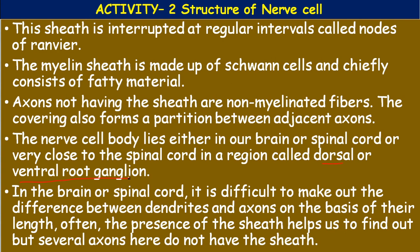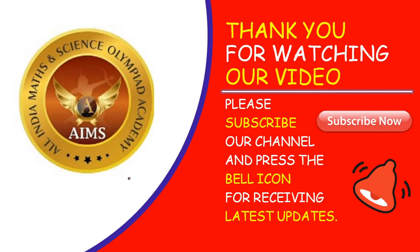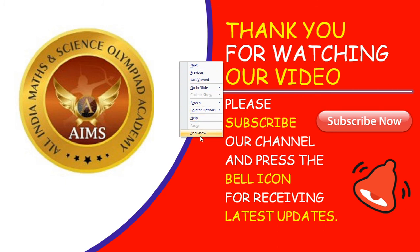Axons without a sheath are called non-myelinated fibers or non-myelinated axons. The nerve cell body lies either in the brain, spinal cord, or very close to the spinal cord in a region called the dorsal or ventral root ganglion. In the brain or spinal cord, it is difficult to distinguish dendrites from axons by length alone; the presence of the myelin sheath helps, but several axons in the brain and spinal cord tissues also lack the sheath. We will discuss more about neurons in the next class — please read the textbook and clarify doubts with your regular teacher.